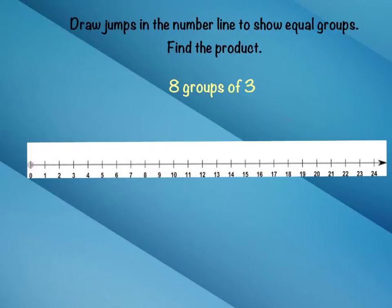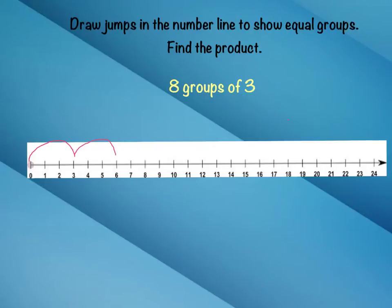On this number line, we're going to draw jumps to show equal groups and find the product. Remember, the product is the answer to a multiplication problem. Now, we are going to go eight groups of three, or eight jumps of three. So I'm going to take my pen and go eight jumps of three. Here's one jump of three, two jumps of three — and we're skip counting here — three, six. Now we're going to go another jump of three: nine. Then another jump of three: twelve. So we have three, six, nine, twelve.